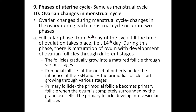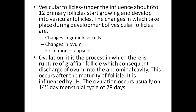The follicles gradually grow into matured follicles through various stages. The primordial follicle: at the onset of puberty, under the influence of FSH and LH, primordial follicles start growing through various stages. Primary follicle: a primordial follicle becomes a primary follicle when the ovum is completely surrounded by granulosa cells. The primary follicle then develops into vesicular follicles.